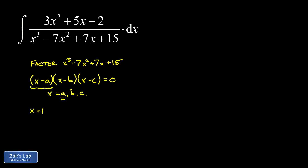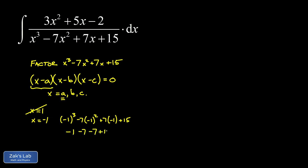Checking x equals one: I get one cubed minus seven times one squared plus seven plus fifteen, which turns out to be sixteen — so that doesn't work. Moving to x equals negative one: negative one cubed minus seven times negative one squared plus seven times negative one plus fifteen gives negative one minus seven minus seven plus fifteen, which is negative fifteen plus fifteen — zero. We found our root on the second guess.